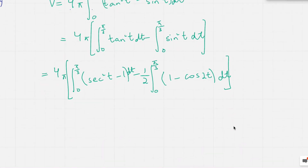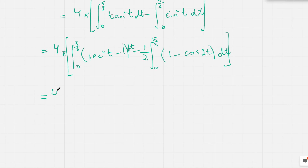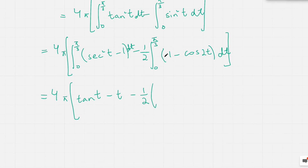Now integrating: the integral of sec squared t gives tan t, and the integral of 1 gives t, so we have tan t minus t. Then minus one half: the integral of 1 is t, and the integral of cos 2t — using the reverse chain rule — is sin 2t divided by 2, so minus sin 2t over 2. Writing the limits 0 to pi over 3.